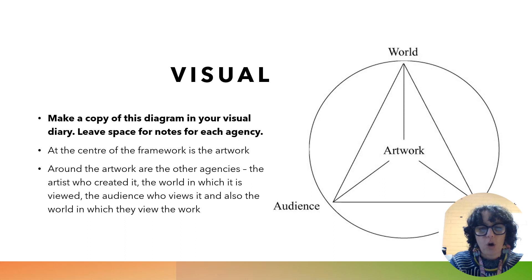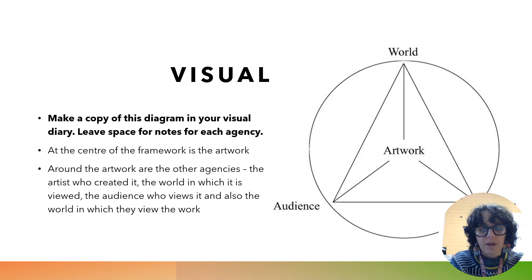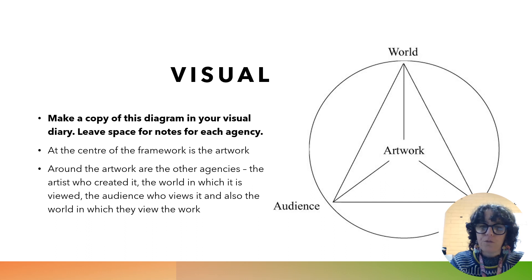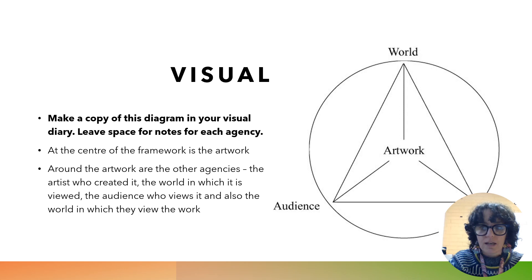Make a copy of this diagram — it's a visual representation of the conceptual framework. At the very centre of the framework we have the artwork that exists as its own entity. Around the artwork are the three other agencies: the artist who created the work is in the bottom corner, the audience that responds to the work is on the opposite side, and at the top we have the world in which that work is created or the world that is represented within the work. These are the four agencies. Take a moment to draw a copy in your visual diary or on an A3 piece of paper, leaving some space around it to take notes. Pause the video here, and when you're ready, you can resume.